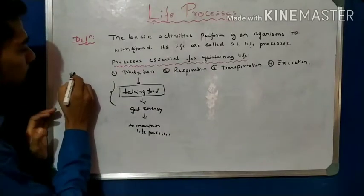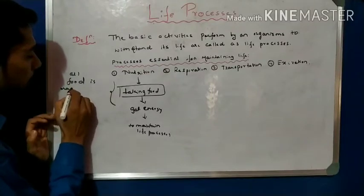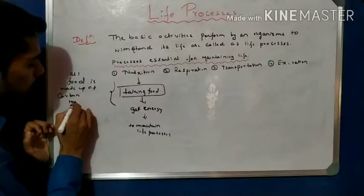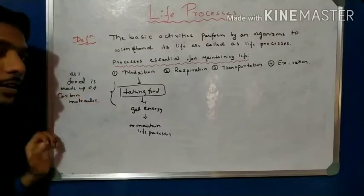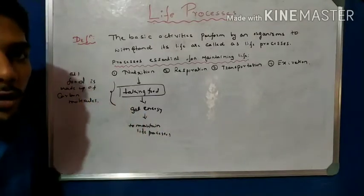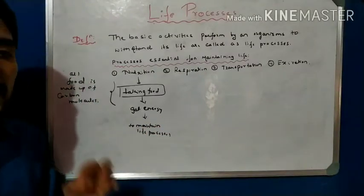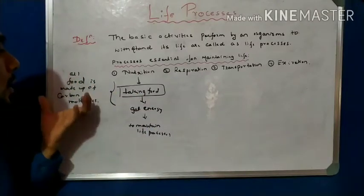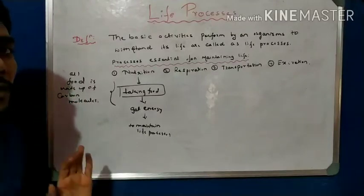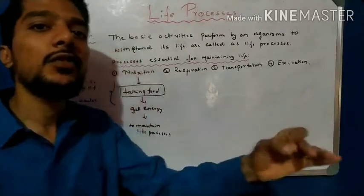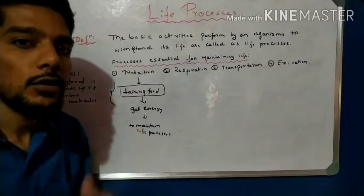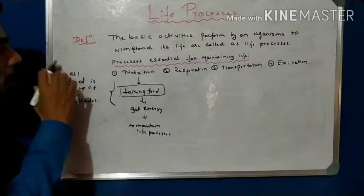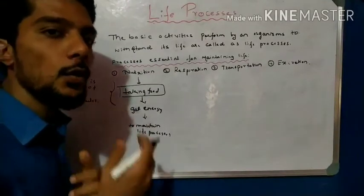All food has one common thing: all food is made up of carbon molecules. All the compounds and food we take are composed of carbon molecules. For example, carbohydrates, glucose, proteins — all are prepared with the help of carbon-based compounds. So organisms take food from the atmosphere in two forms. One is food made up of carbon molecules, and the second is oxygen.